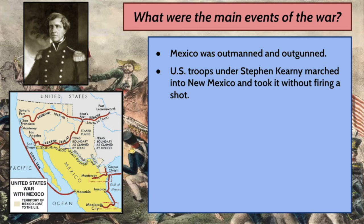U.S. troops under Stephen Kearney marched from Kansas to New Mexico and basically took over New Mexico and Santa Fe without firing a shot. Mexican troops, to the extent that there were any, offered no resistance, and the citizens who were there basically just accepted what happened. There was no bloodshed, and New Mexico came under U.S. control.